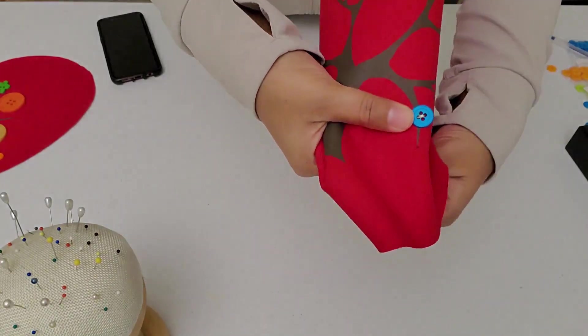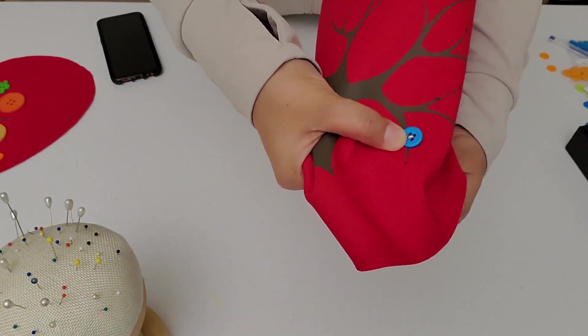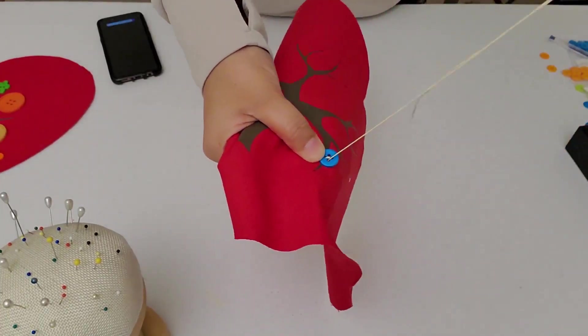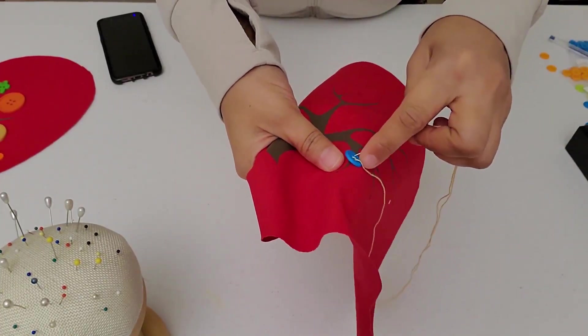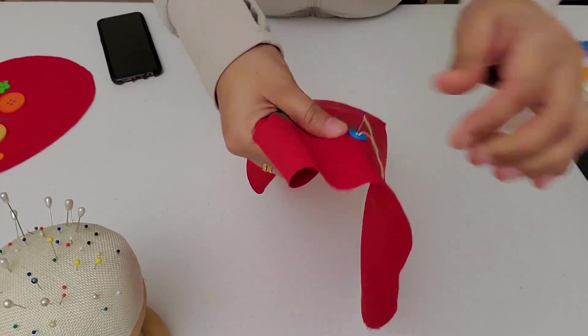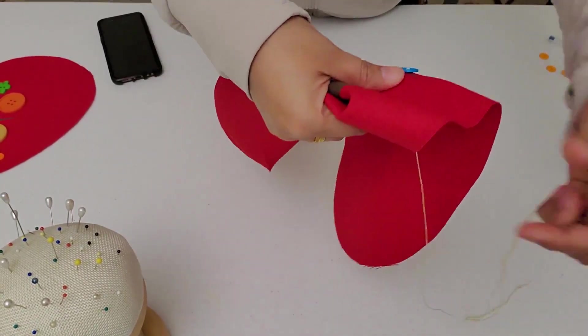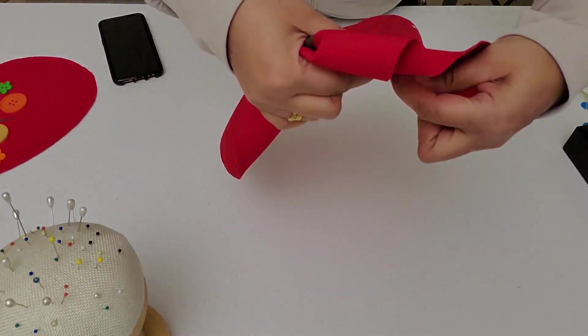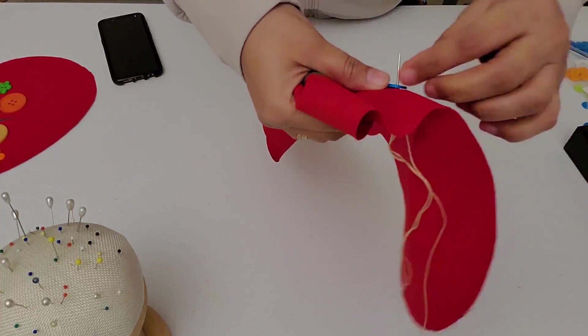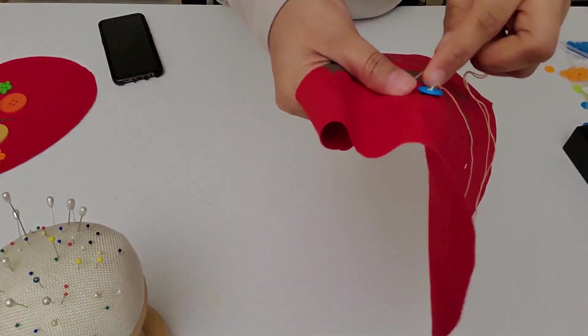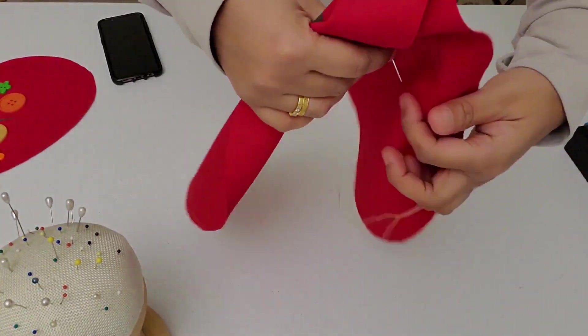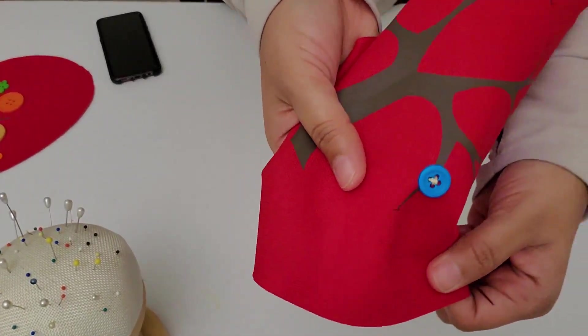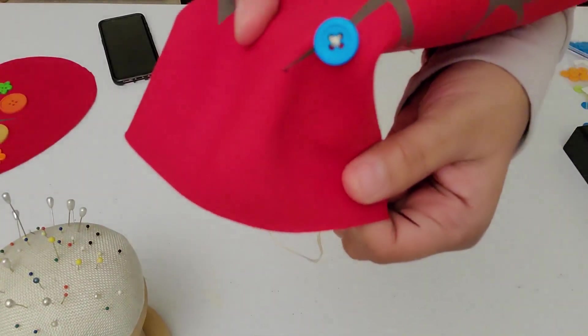Take it and go down and then on the same hole, come out one more time. Go out. Now, you are going to come out from the opposite circle. You did it two times. This is how it is going to look.